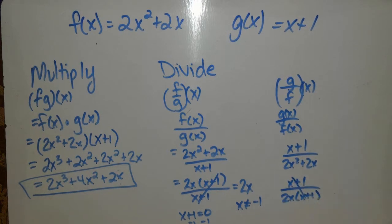x plus 1s cancel, leaving 1 over 2x. And x can't be,